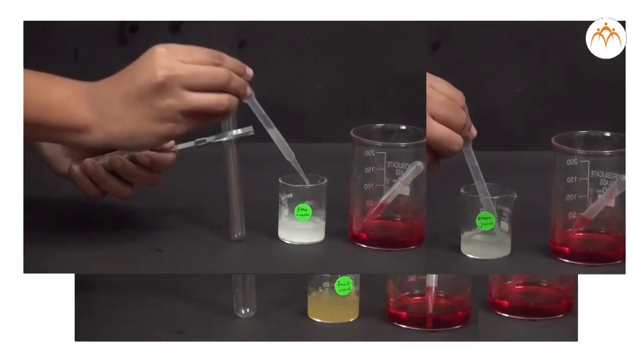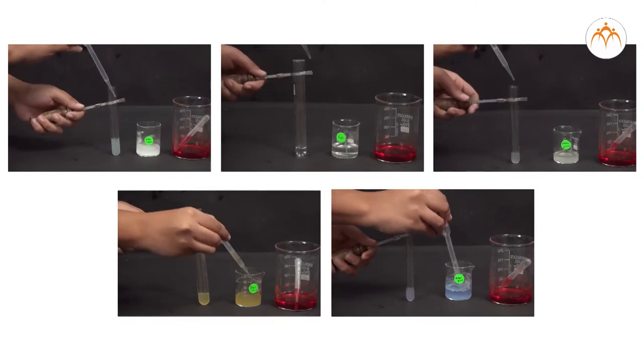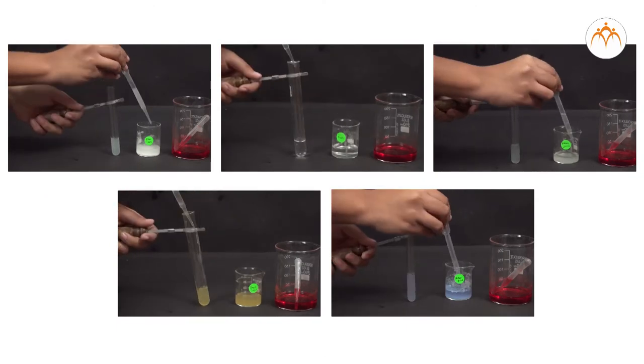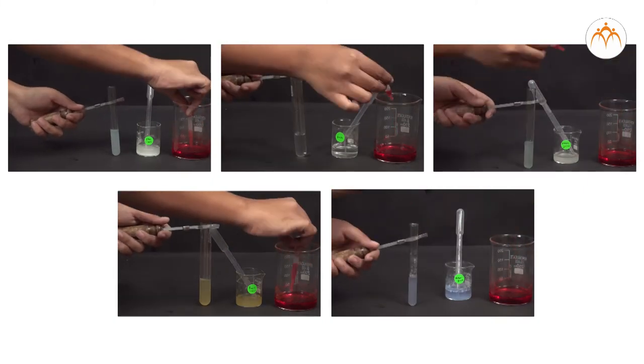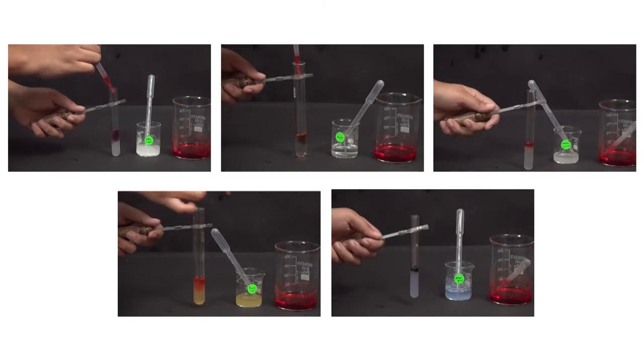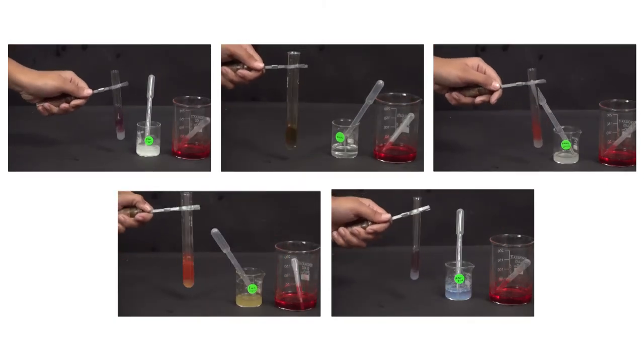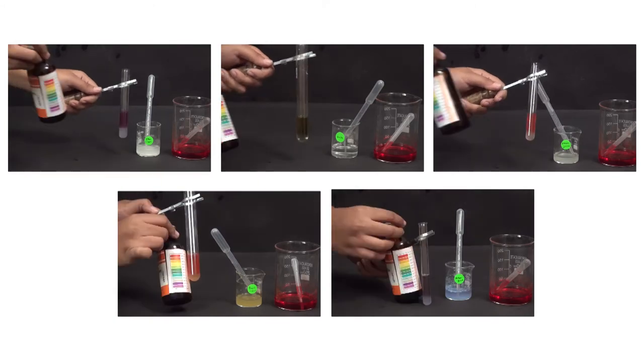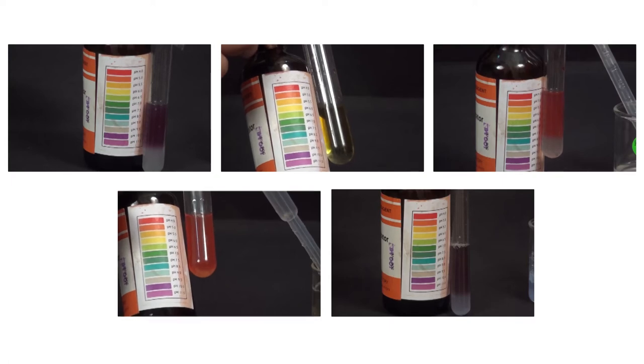We took a sample of each material in a separate test tube. We put some water in each test tube and prepare solutions as per the requirement. We put 2 drops of universal indicator in each test tube with dropper. We observed the color change taking place in the solution in each test tube and compare it with the color shades on the bottle of universal indicator.